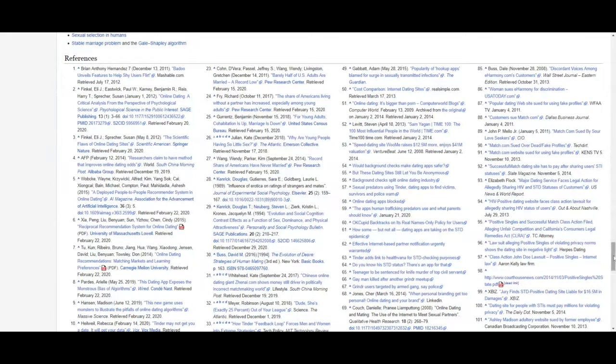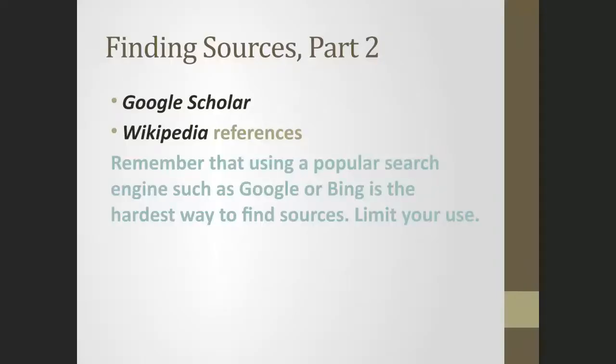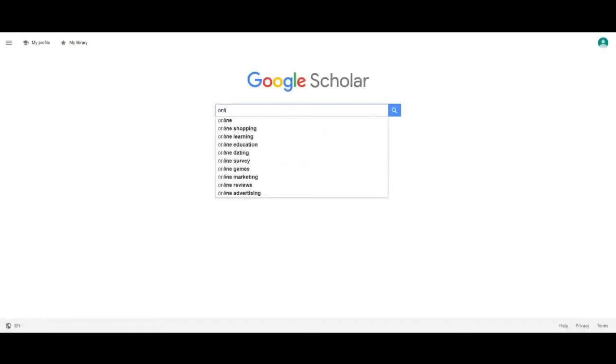Google Scholar is another option — it functions more like a database of reliable information contained within Google. I'll show you briefly, though I find it a bit harder to use than the GNTC databases because it has fewer filters. Let's search 'online dating' as an example.